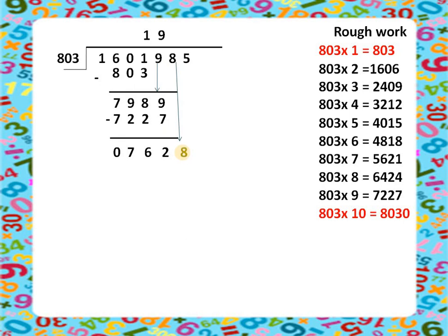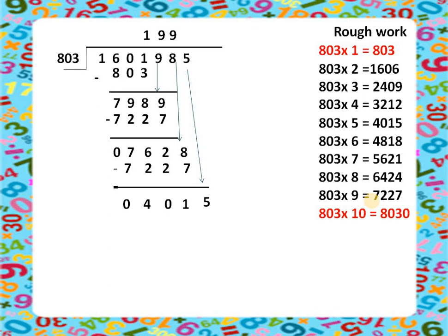We divide 7628 by 803. From the rough work, 9 times 803 is 7227, so we write 9 as the quotient again. We subtract 7227: 8 minus 7 is 1, 2 minus 2 is 0, 6 minus 2 is 4, 7 minus 7 is 0. The remainder is 401. We bring down 5 to get 4015. From the rough work, 803 times 5 is exactly 4015, so we write 5 as the quotient.